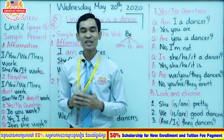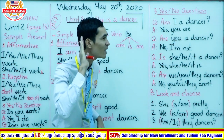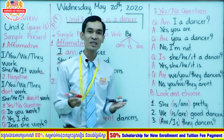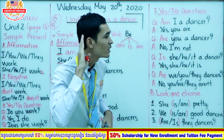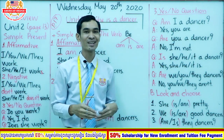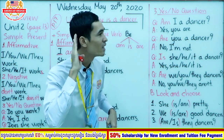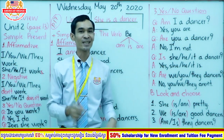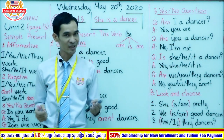So in affirmative form we focus on the correct subject for each verb to be. What subject uses 'am'? — 'I'. What subject uses 'are'? — we, you, they. What subject uses 'is'? — she, he, it. Very good. Now let's continue to negative form.